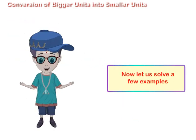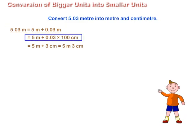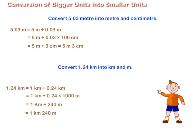Now, let us solve a few examples. To convert 5.03 m into meters and centimeters, we write 5.03 m is equal to 5 m plus 0.03 m. We convert 0.03 m into centimeters by multiplying it by 100 and get 3 cm. So we add 5 m plus 3 cm and get 5 m 3 cm.